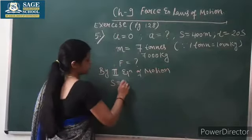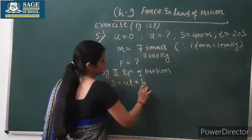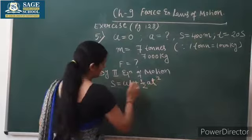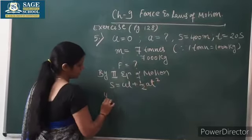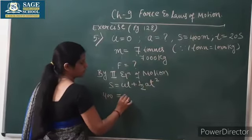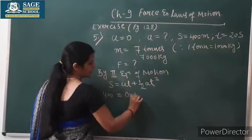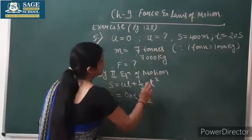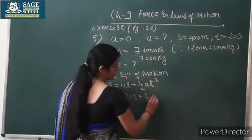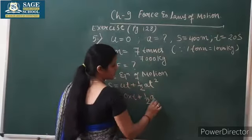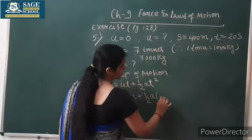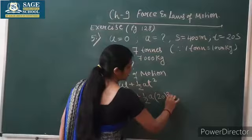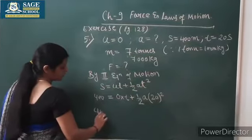By second equation of motion, that is S = ut + 1/2 at². Let's substitute the value of S. That is 400 = u as 0 into time plus 1/2, value of a is unknown, a as it is, t² time is given as 20 seconds, so that is 20². So let's solve it.